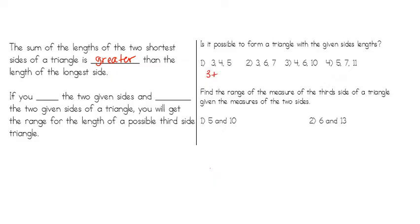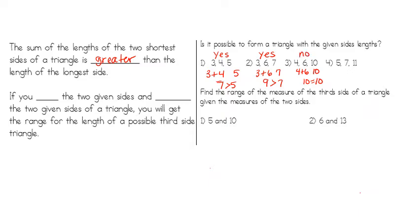Take your two shortest sides and add them together, then compare to the longest side. Example one: three plus four is seven, which is bigger than five — it is a triangle. Example two: three plus six is nine, which is bigger than seven — yes, that's also a triangle. Example three: four plus six equals ten, but ten is not greater than ten — it can't be equal, just two lines on top of each other, so no triangle. Example four: five plus seven is twelve, which is bigger than eleven — that's a triangle.